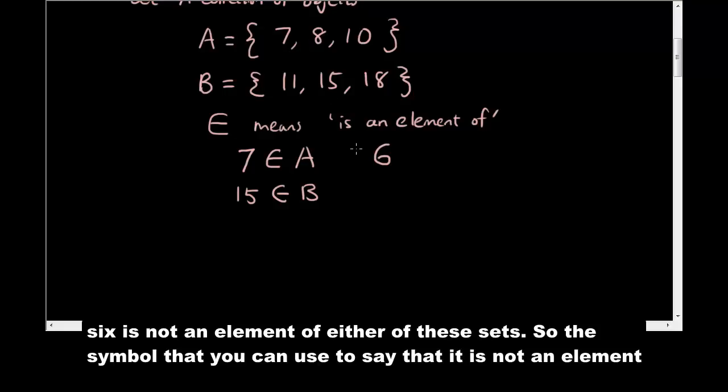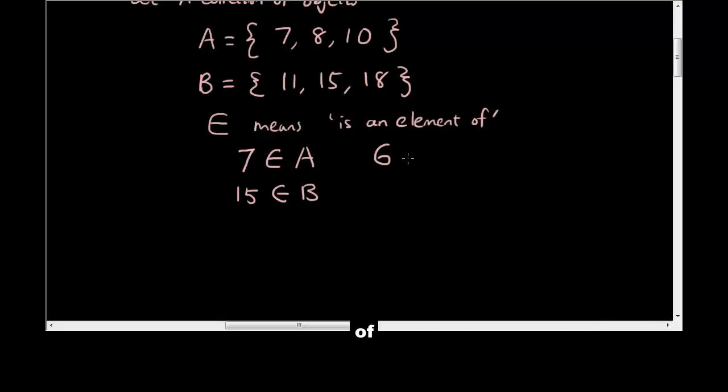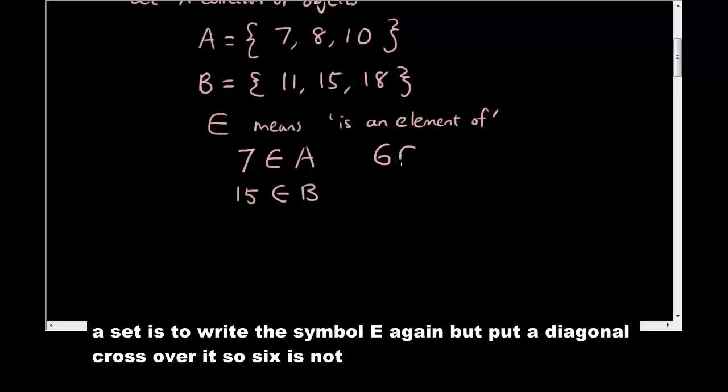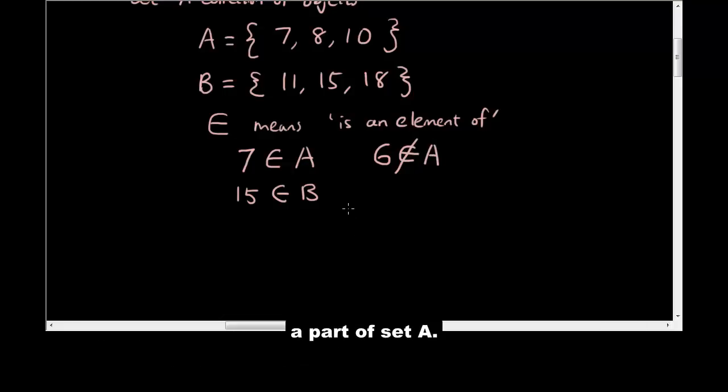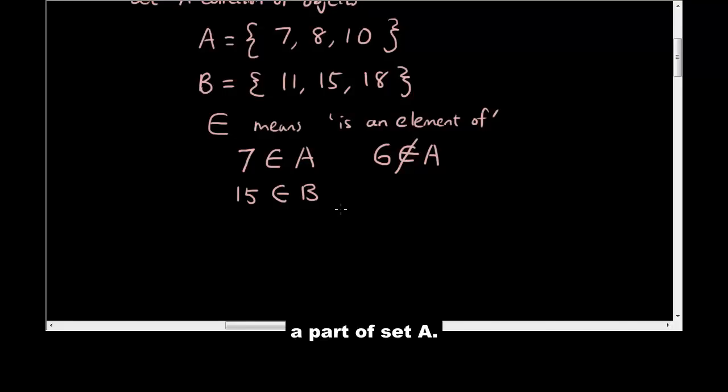So the symbol that you can use to say that it is not an element of a set is to write the symbol E again, but put a diagonal cross over it. So six is not a part of set A.